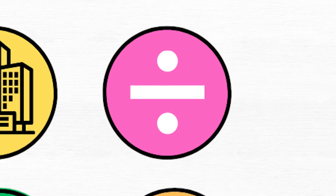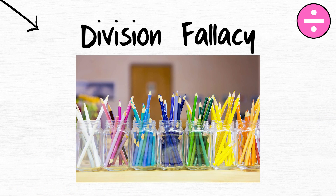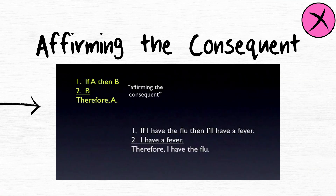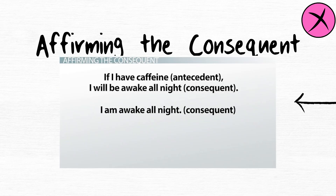Division fallacy. The division fallacy assumes that what's true for a whole is true for its parts. Affirming the consequent incorrectly infers the original statement from its consequences.